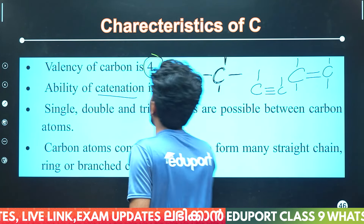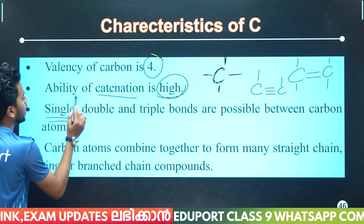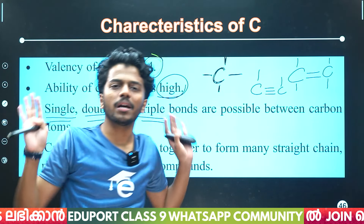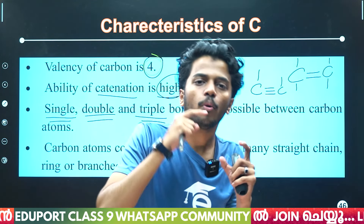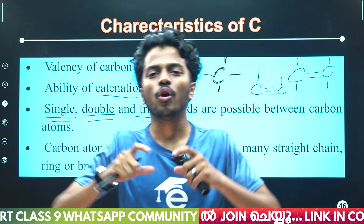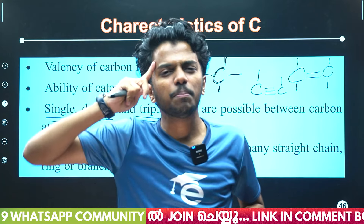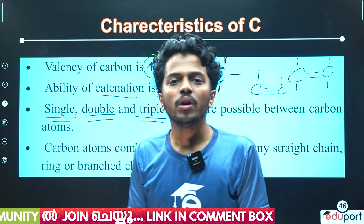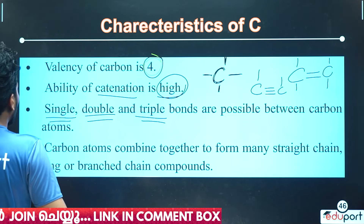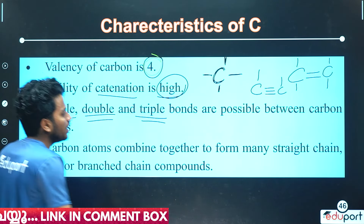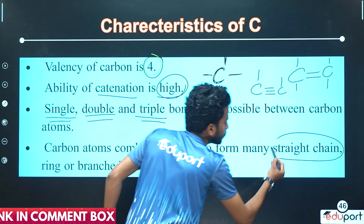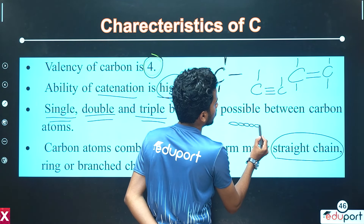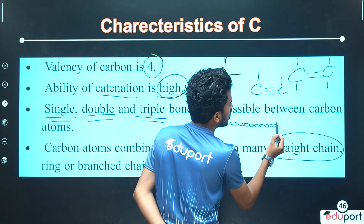Single bond, double bond, triple bond — that is all possible between carbon and carbon. One carbon to another can form a single bond, double bond, or triple bond. Carbon atoms combine together to form many straight chains — a straight chain structure.